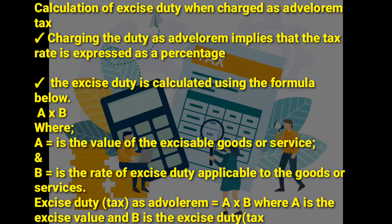Where A is the value of the excisable goods or services — that is, the excisable value — and B is the rate of excise duty applicable to the goods or services. So when calculating excise duty given an ad valorem tax, we multiply the value of excisable goods or services by the rate of excise duty applicable to those goods or services.